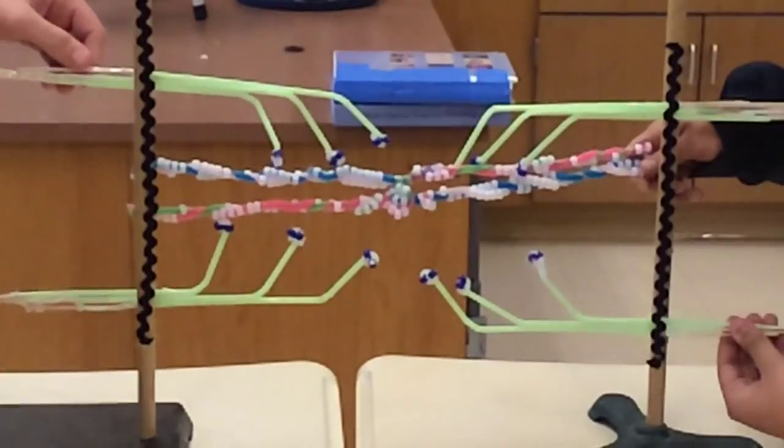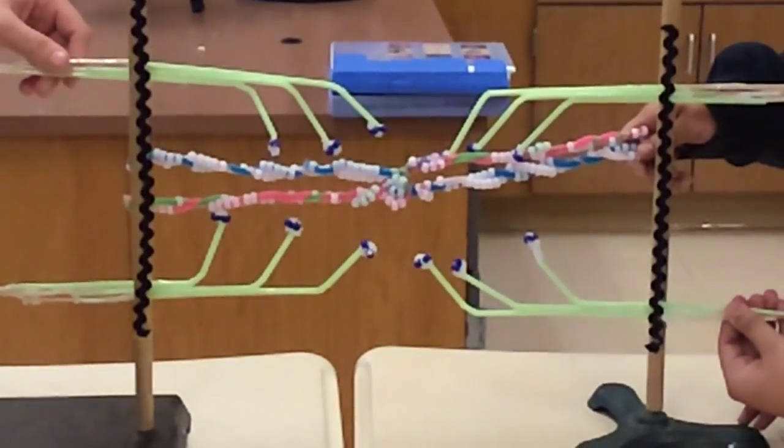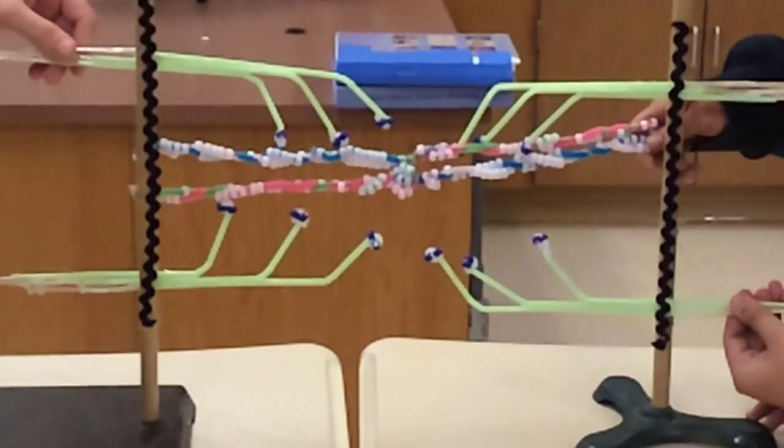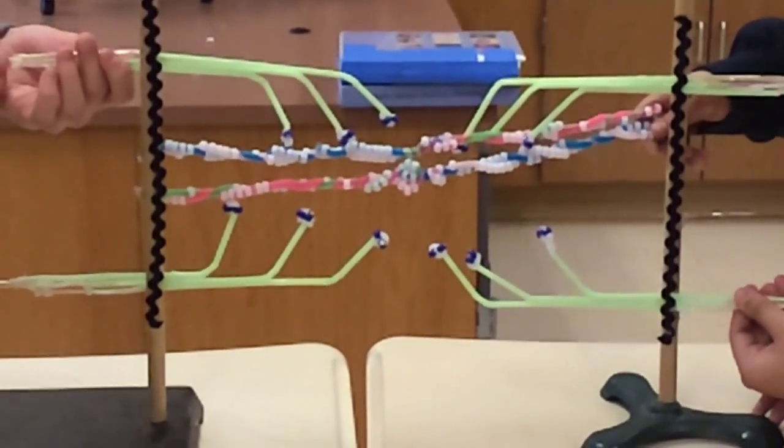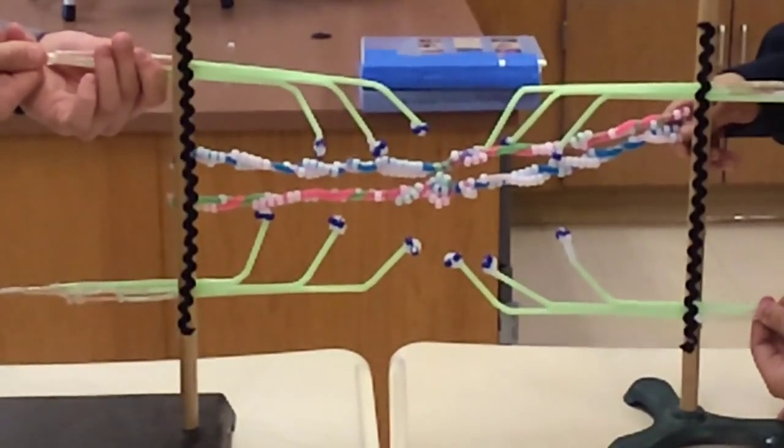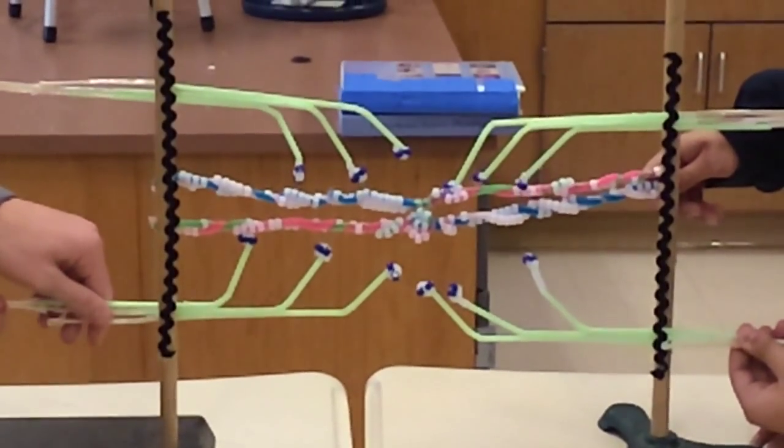While this happens, the sarcolemma is stimulated and sends a muscle impulse over the surface of the muscle fiber and deep within the fiber. This continues to travel through the transverse tubules until it reaches the sarcoplasmic reticulum.